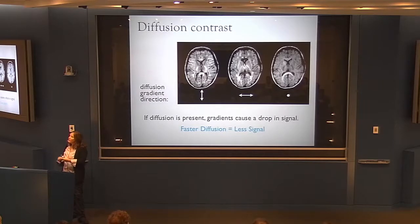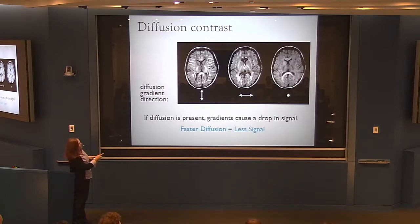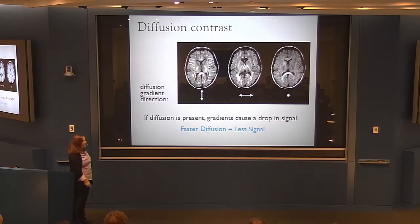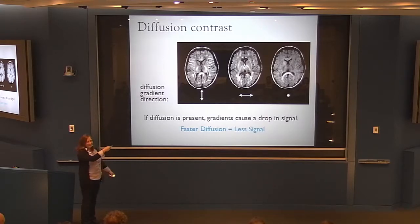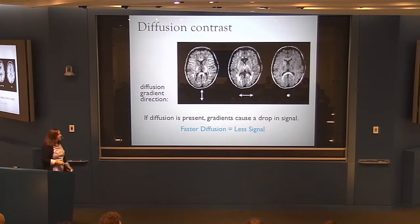For example, in an image with bright signal along the corpus callosum and bright corticospinal tract, we're not weighting along those directions. Where those structures appear dark, the weighting is along that direction — the faster diffusion means less signal. If the corpus callosum is dark in an image, the diffusion weighting is along those fibers.